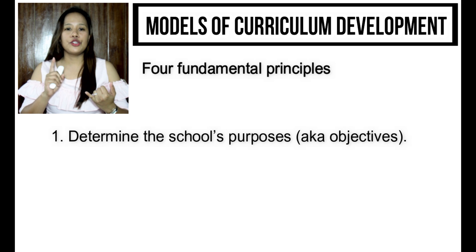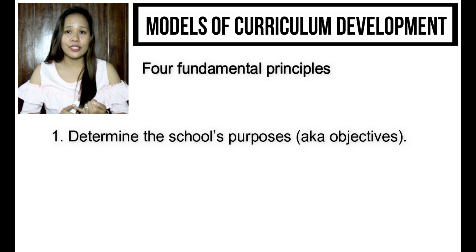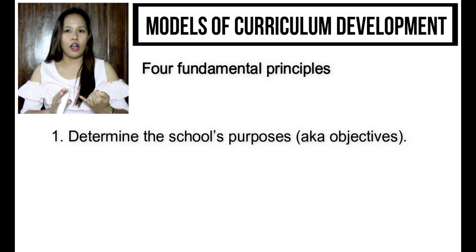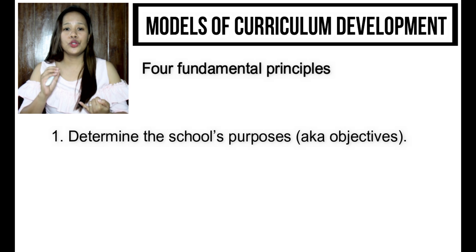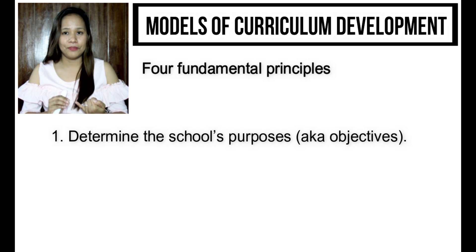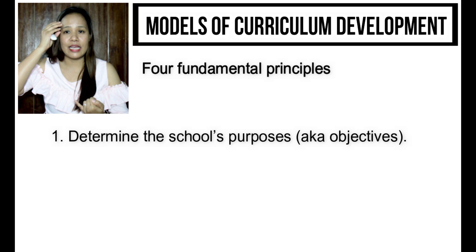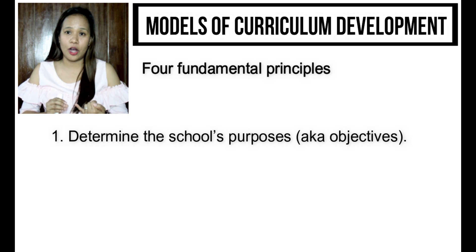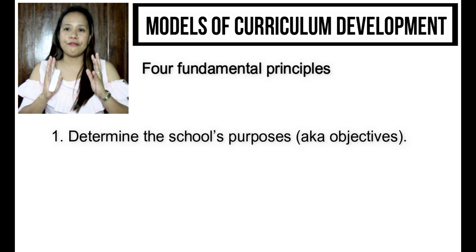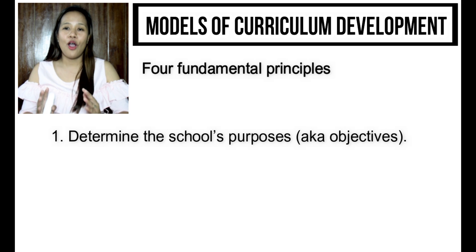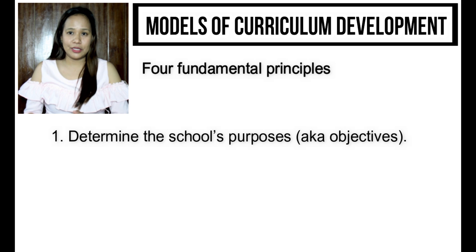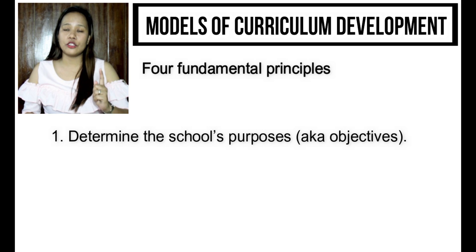The first principle is to determine the school's purposes, objectives, or outcomes, and this answers the question: what educational purposes should schools seek to attain? What kind of graduates does the school desire for its students? In our own context, we term this institutional outcomes, and our institutional outcomes reflect the characteristics of the ideal graduates.